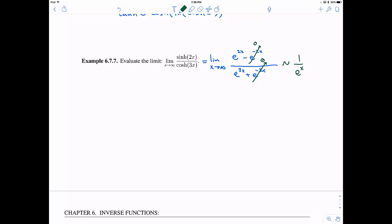So this is going to be something like 1 over e to the x, right? Because this is e to the 2x divided by e to the 3x. Well, 1 over e to the x is going to head towards 0 as x gets very large. So I think that the answer should be 0.